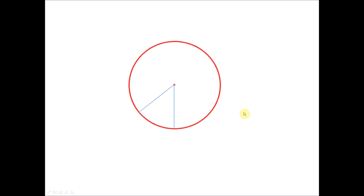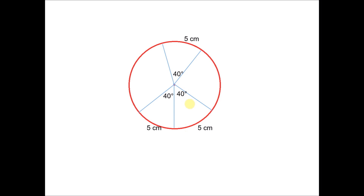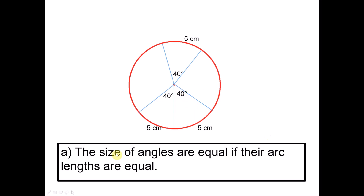Now I have a circle here with the center, and I form an angle at the center subtended by this arc. If I measure the arc length I get 5 cm, and when I measure the angle at the center I get 40 degrees. Now if I form another angle at the center with the same arc length of 5 cm, the angle at the center is 40 degrees as well. And another angle with arc length 5 cm also gives 40 degrees. So the conclusion is: the size of angles are equal if their arc lengths are equal.